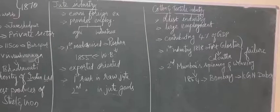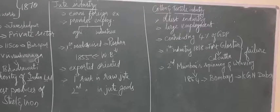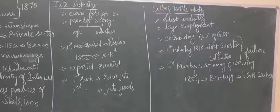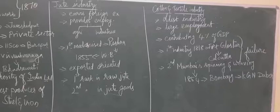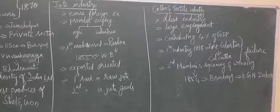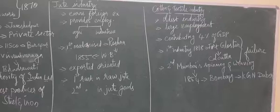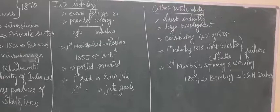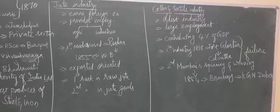The first modernized cotton industry was established in the year 1818 at Calcutta, named Fort Gloucester, but it was not successful and did not achieve its goal. The second mill, named Mumbai's Spinning and Weaving Co., was established in the year 1854 by KGN Davar. So the first textile industry was at Calcutta, but the successful spinning and weaving mill was established at Mumbai in 1854.